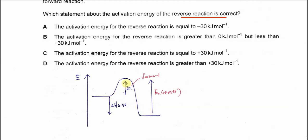And the EA of the forward is this one, so it's positive 30. And the difference between the reactants and products is the enthalpy change of the reaction.